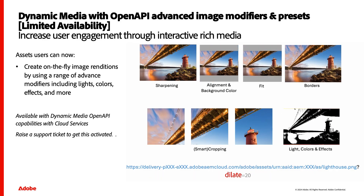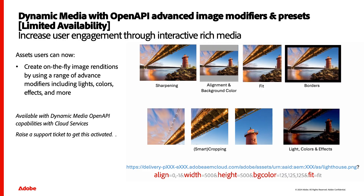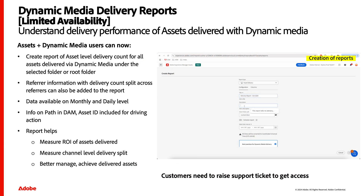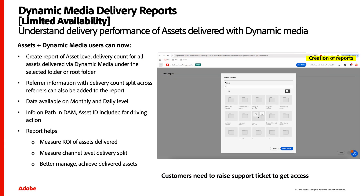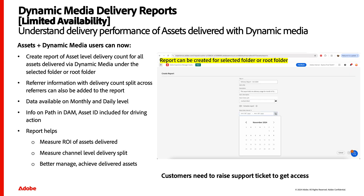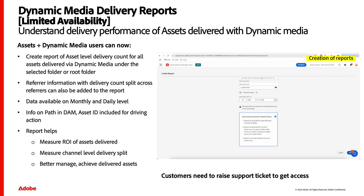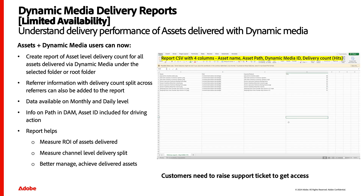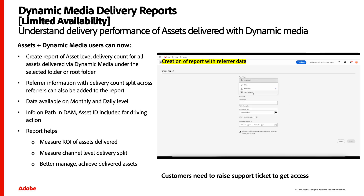This feature is in limited availability right now, but you can get access by raising a support ticket and the team will get back to you. The Dynamic Media team have also introduced new delivery reports, allowing you to understand the performance of your assets when delivered via Dynamic Media. These reports are easy to set up by defining the path of the assets you'd like to report on, as well as the date range. Once you do that, you can understand the ROI of the assets — how many times they're downloaded, referrer information, and a lot more detail. This is also a limited availability option, but raise a support ticket and the team will allow you to get access.